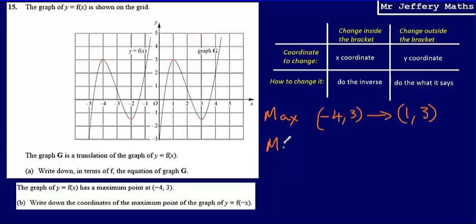Then if I look at the minimum point as well, what I can see is that this is (-2, -1), and that is being translated to a minimum point of (3, -1).